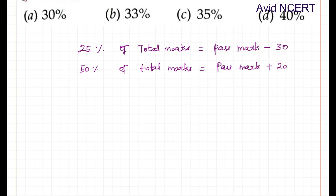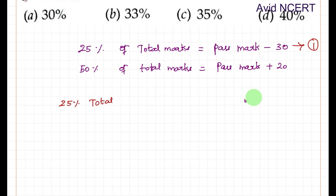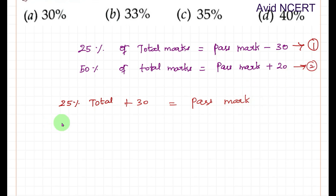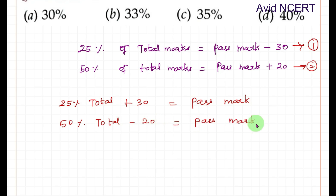So from these two equations, we can equate the pass marks. From the first equation, pass mark equals 25 percent of total marks plus 30. From the second equation, pass mark equals 50 percent of total marks minus 20.